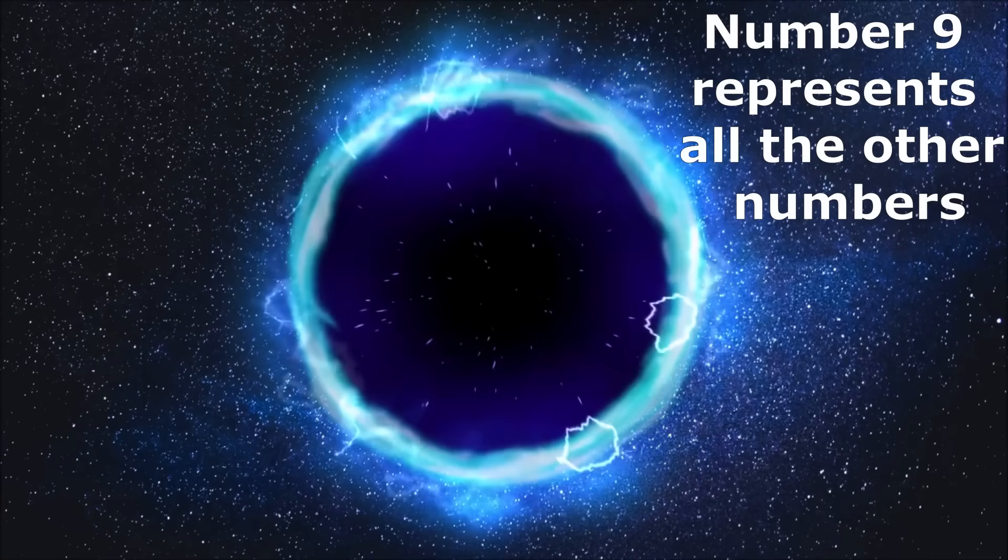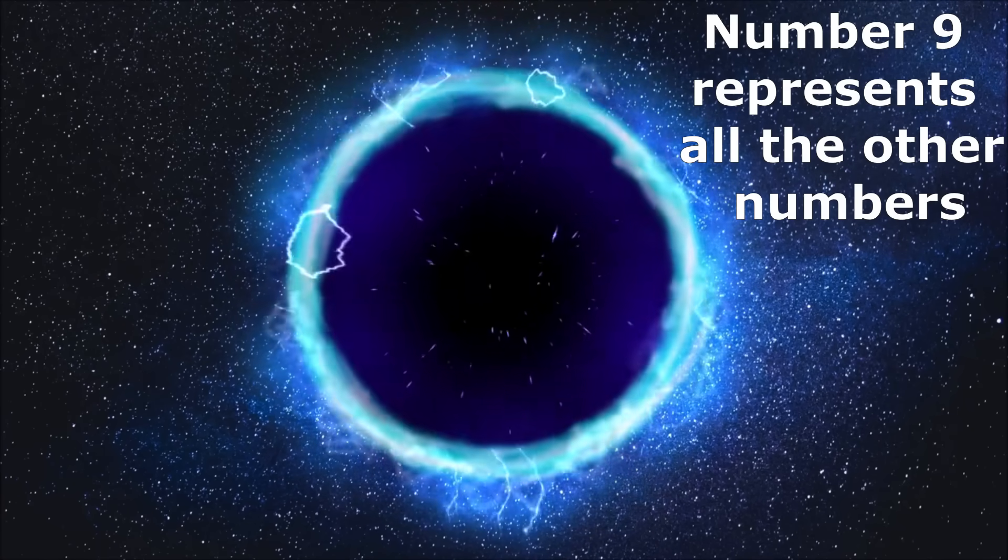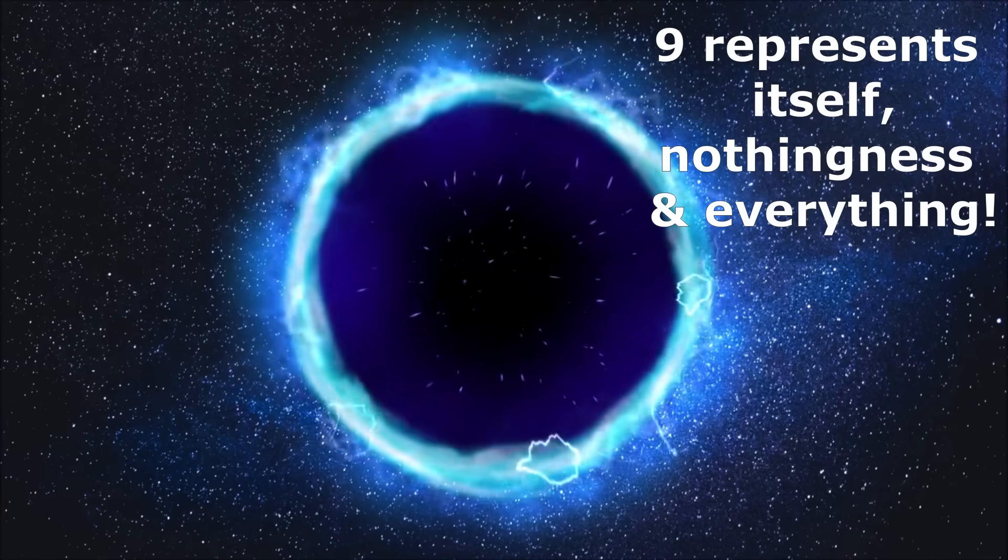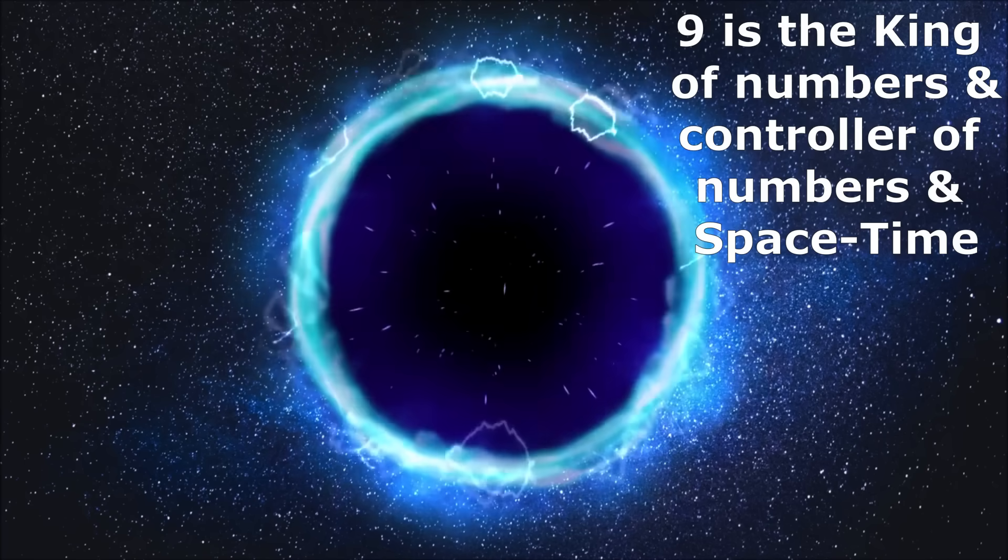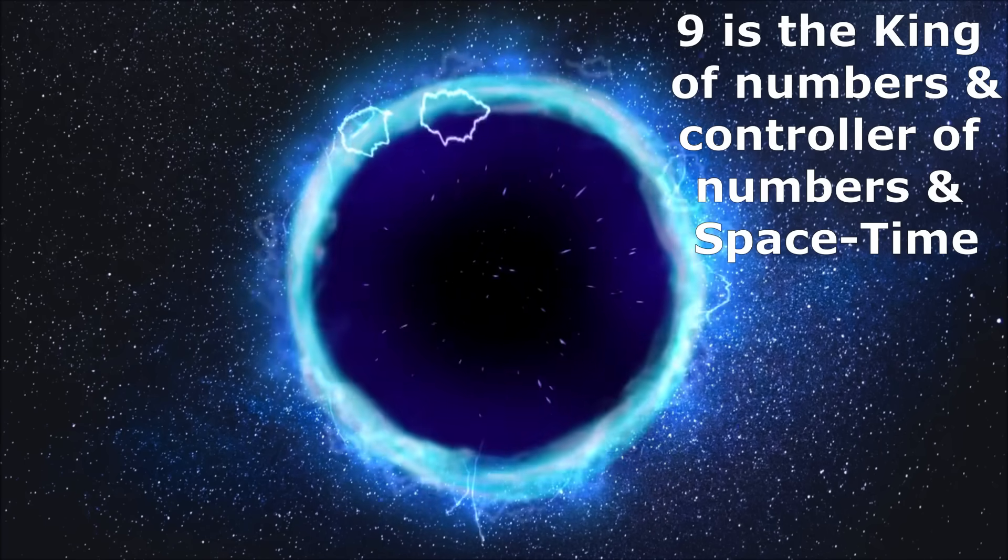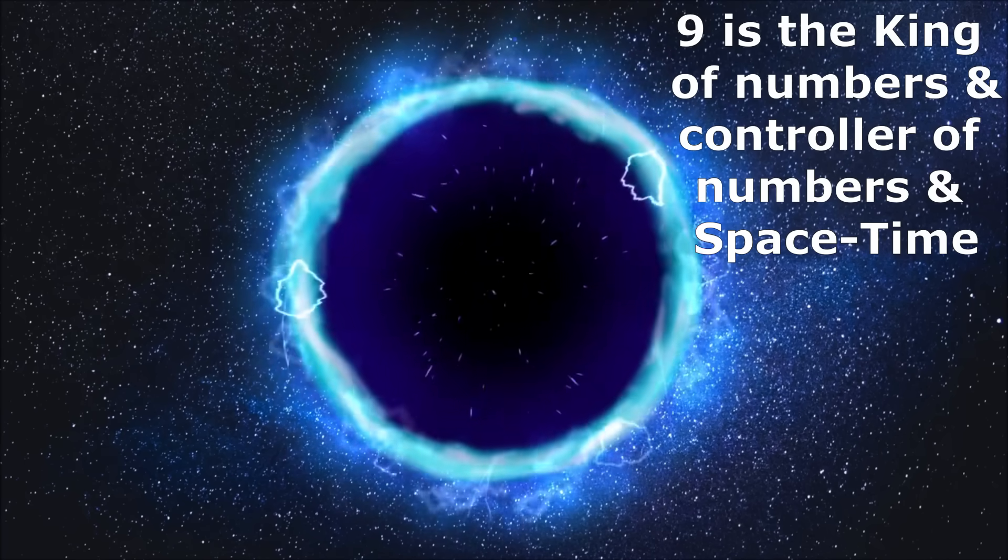Hence, we can say that number 9 represents all the other numbers. It represents itself and also nothingness and everything. Number 9 is the king of all the numbers that controls all the other numbers and space-time.